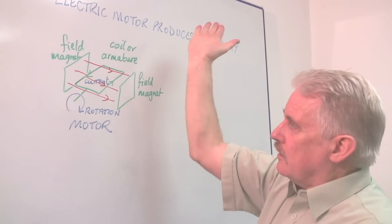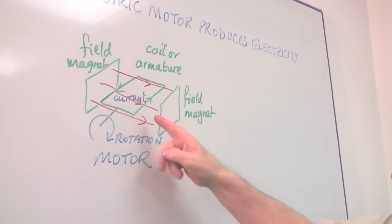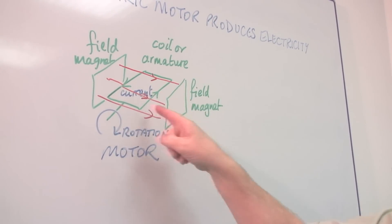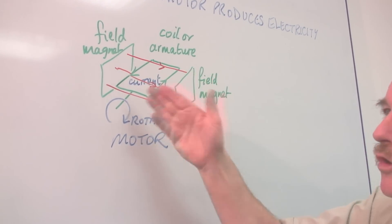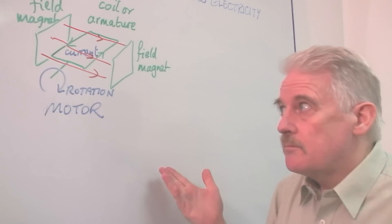As the wire of this coil cuts through the red field lines, which I've shown here, it generates current in the coil. As simple as that.